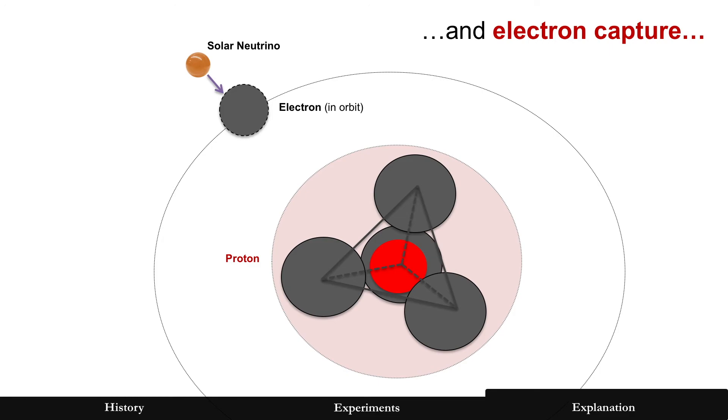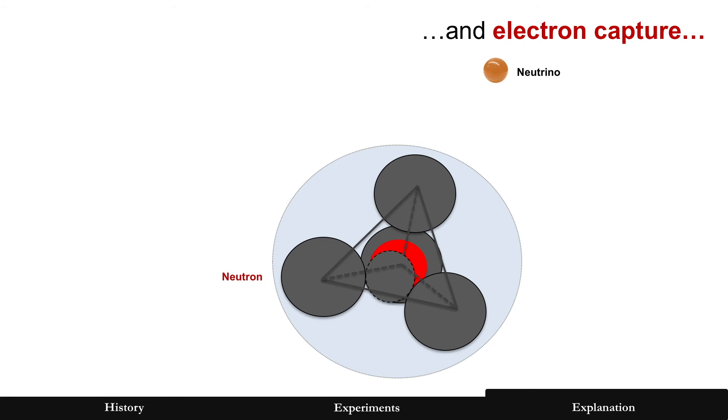Electron capture would be very, very similar, but now you've got an electron that's in orbit. Something strikes it to give it enough force to overcome the repelling force, and of course, it's attracted by the positron, and that turns the proton into the neutron, known as electron capture process.